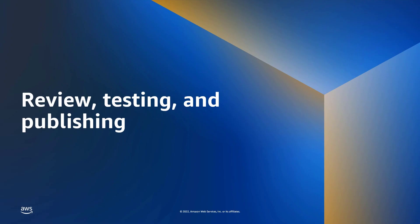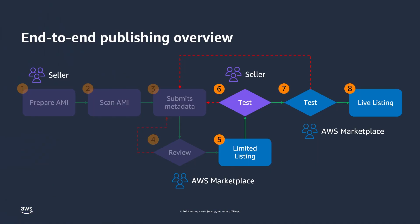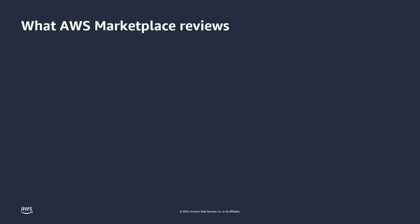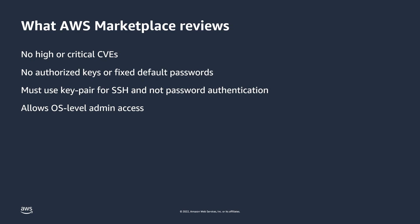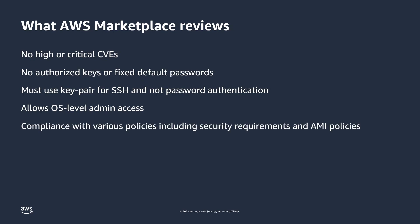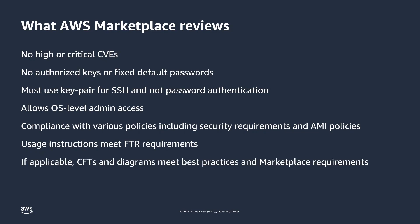Finally, we'll go over the review, testing, and publishing steps. Once your limited listing is created, you'll have some back-and-forth communication with AWS Marketplace regarding its compliance and readiness. AWS Marketplace reviews that your AMI has no high or critical common vulnerabilities and exposures, or CVEs, no authorized keys or fixed default passwords, and must use key pair for SSH and not password authentication. Additionally, you must allow operating system-level admin access — if you're using Linux, the root user must be accessible by the buyer. The product is reviewed for compliance with security requirements and AMI policies, usage instructions must meet AWS foundational technical review guidelines, and any CloudFormation templates and diagrams must meet Marketplace best practices. AWS Marketplace will also confirm the AMI product can successfully launch in accordance with the provided usage instructions and that it is accessible.